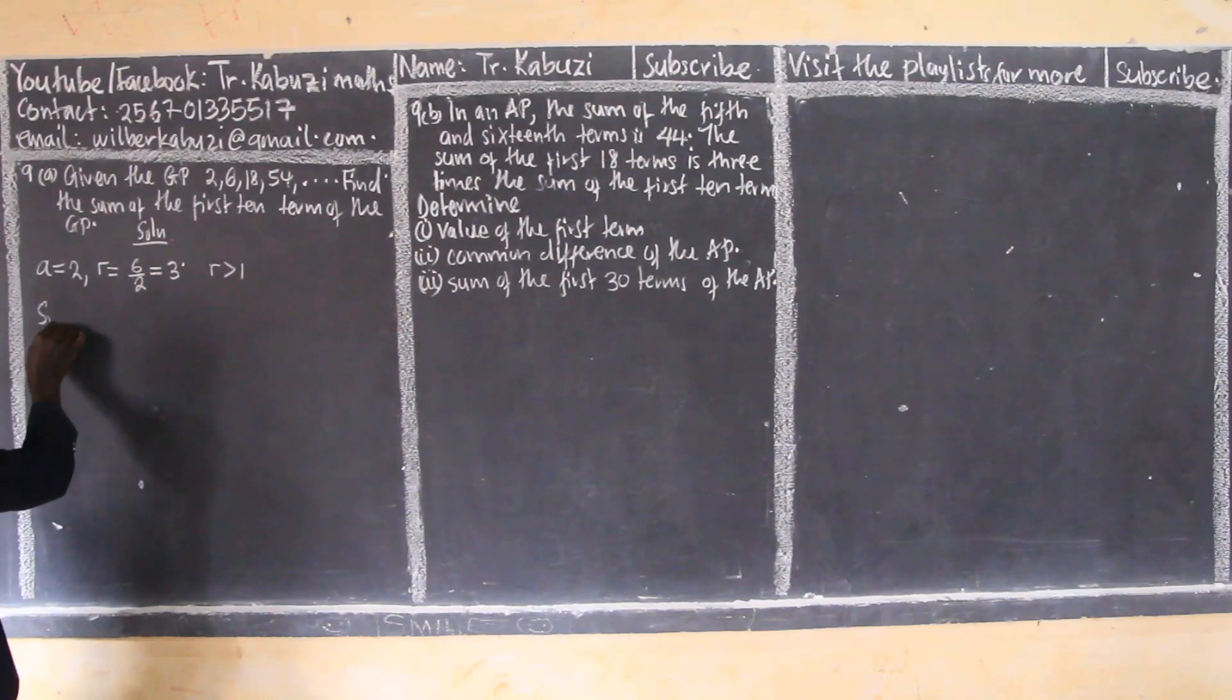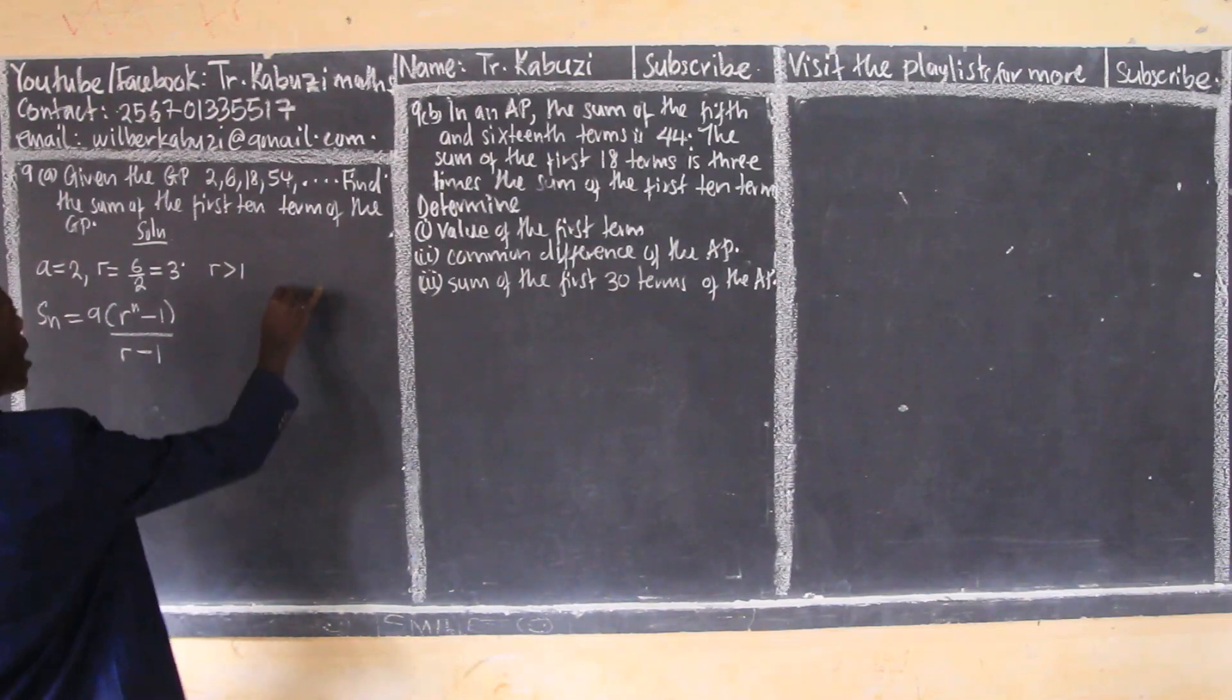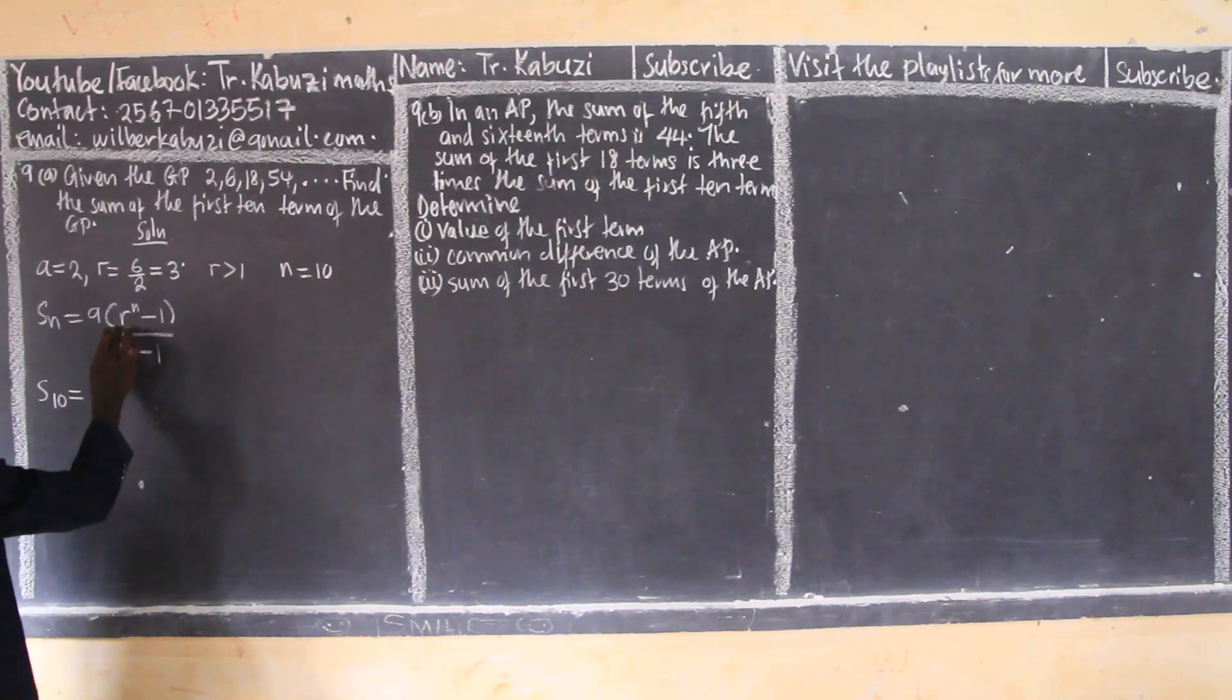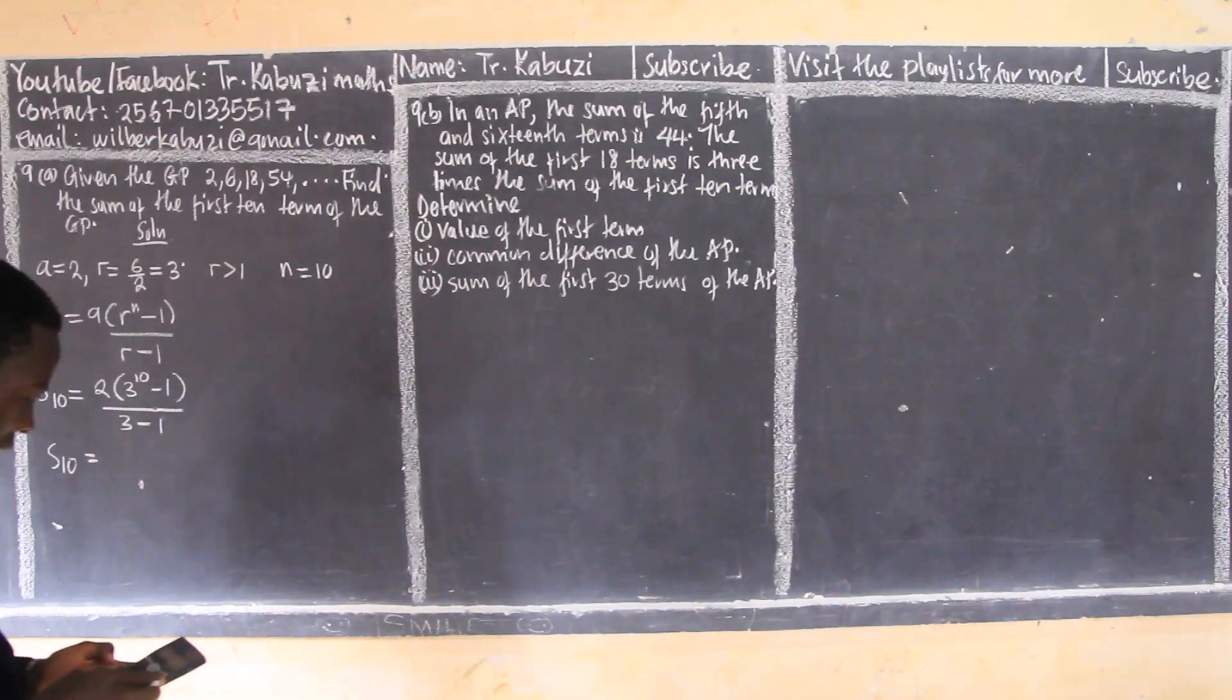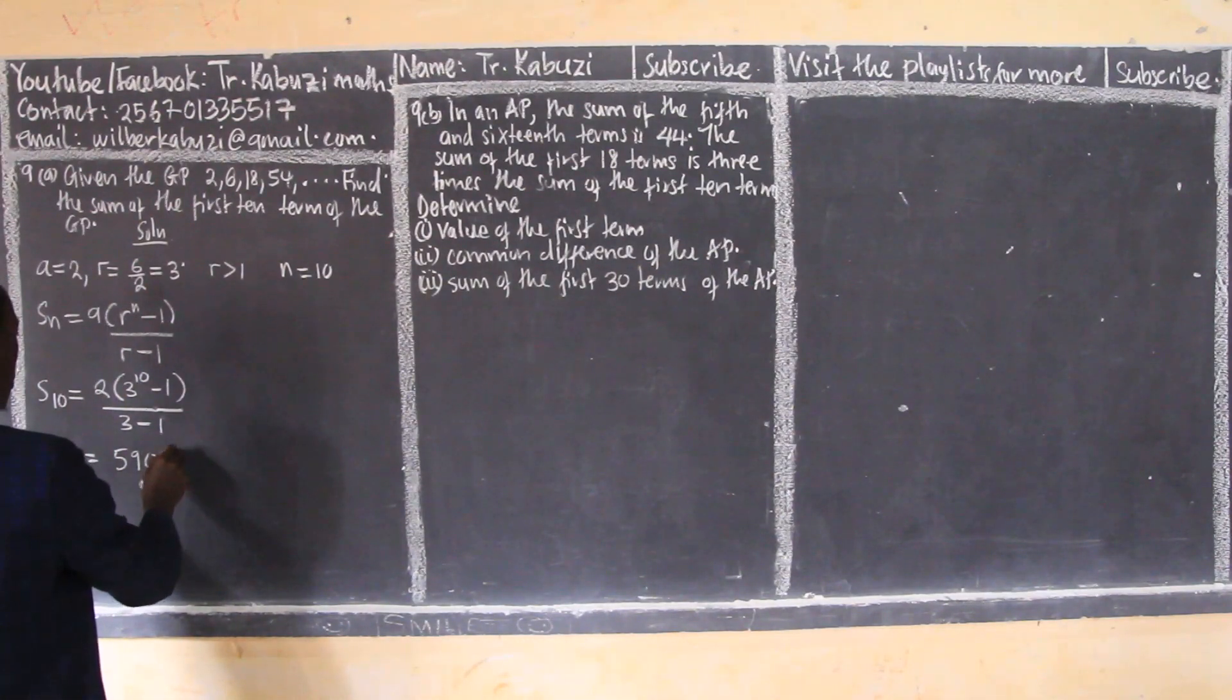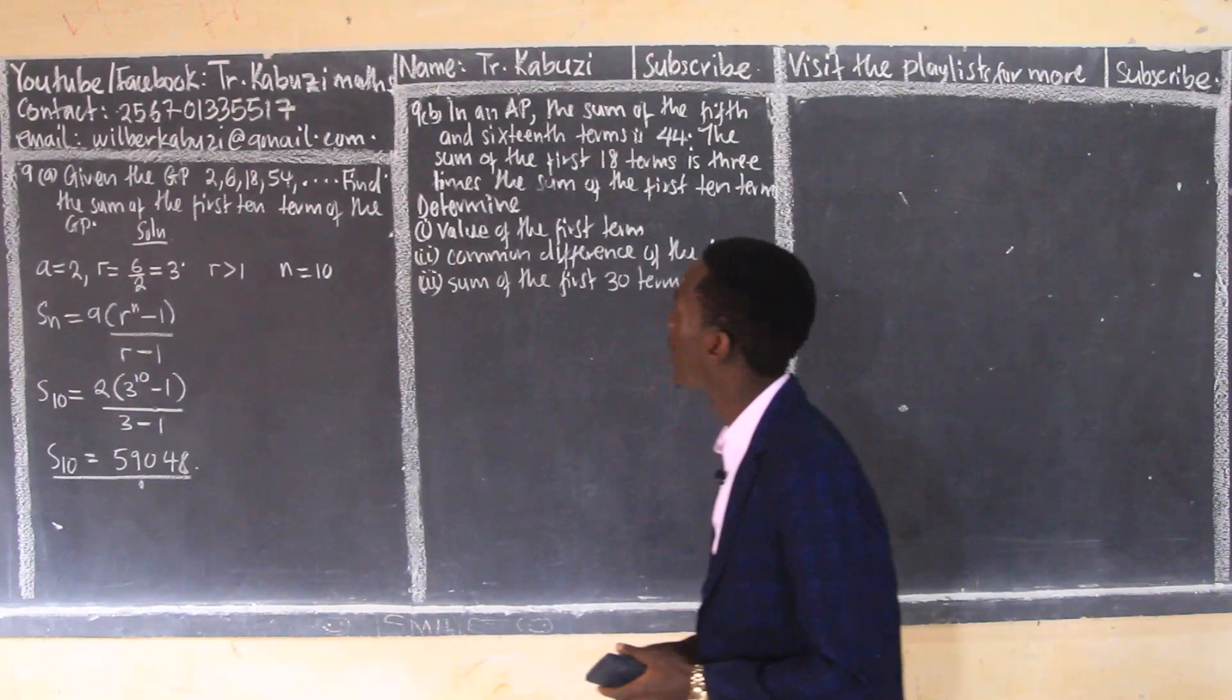If R is greater than one, then the sum we use is a(R^n - 1) over R minus 1. So from here you're told that the terms are ten, so just substitute in this formula. So now for ten terms, I'm going to be having my a which is 2, then R which is 3 power ten, over 3 minus 1. From there, straight away get your calculator. So from there on my calculator I'll get 59,048. So that's what I obtain on my calculator. So that's the sum, which is quite easy.